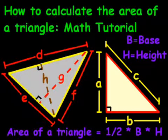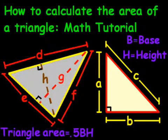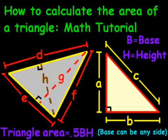So the area of a triangle is going to equal one-half B times H. And rewritten there, we'll just call it 0.5BH. Now, the base for the triangle can be any side. It doesn't have to be the bottom, but it can be.